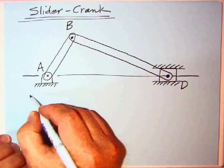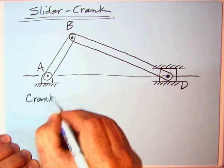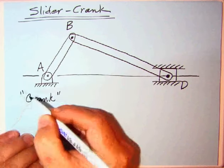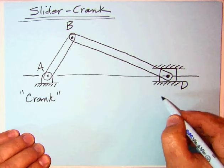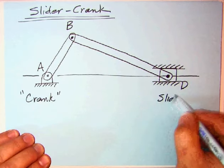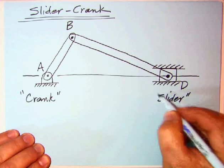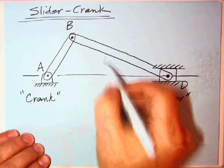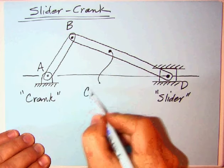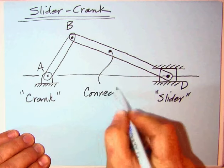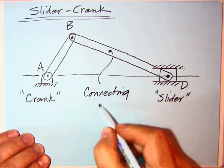In this particular assembly, AB is called the crank, and over here this is called the slider, hence the slider crank, and connecting the two as you might imagine is the connecting rod.